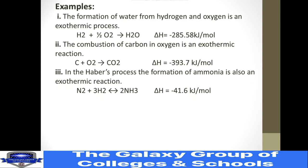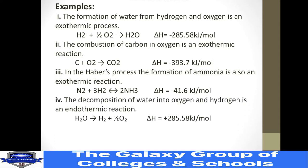Example 3: In the Haber process, the formation of ammonia from nitrogen and hydrogen gases is also an exothermic reaction. The heat change is −41.6 kJ/mol. The negative sign indicates that this is an exothermic reaction.